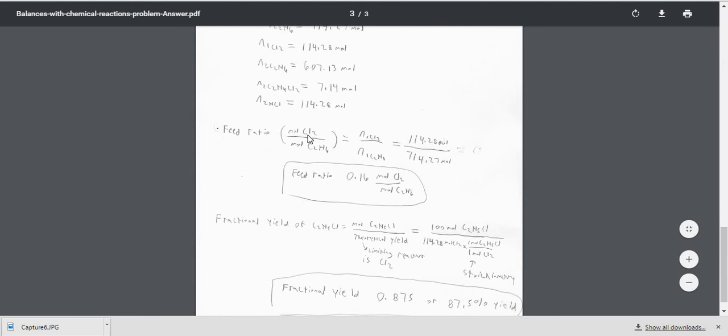Looking at the feed ratio, we want to look at the moles of Cl2 coming in over the moles of ethane coming in. And comparing those numbers, we get a feed ratio of 0.16 moles of Cl2 per mole of C2H6.